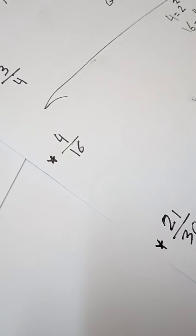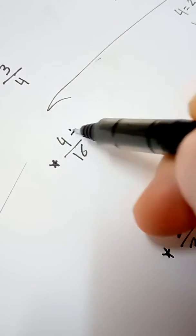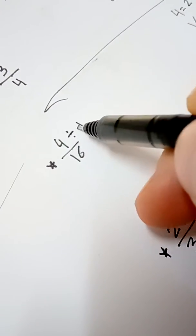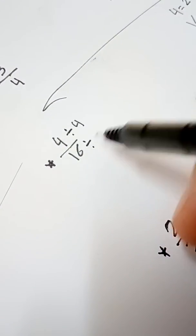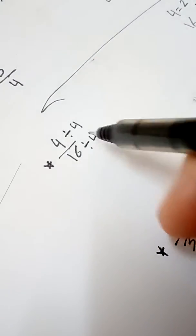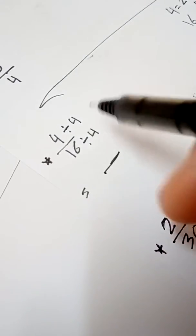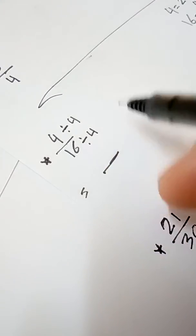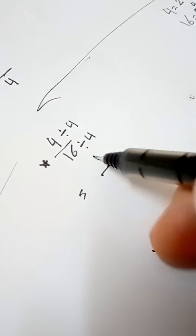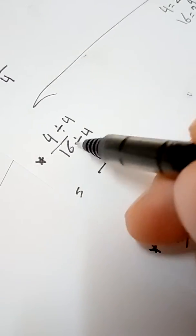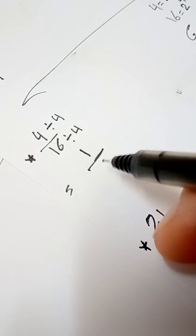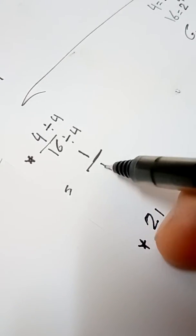Go back to the fraction and divide by the GCF. 4 divided by 4 equals 1, and 16 divided by 4 equals 4. So the simplest form of 4 over 16 is 1 over 4.